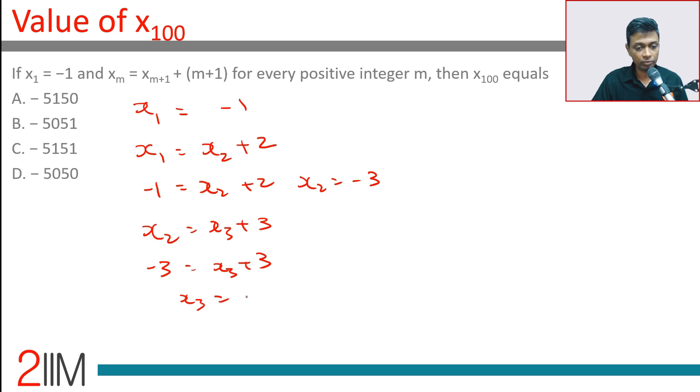Therefore x3 = -6. So we have x1 = -1, x2 = -3, x3 = -6. Now for x4.